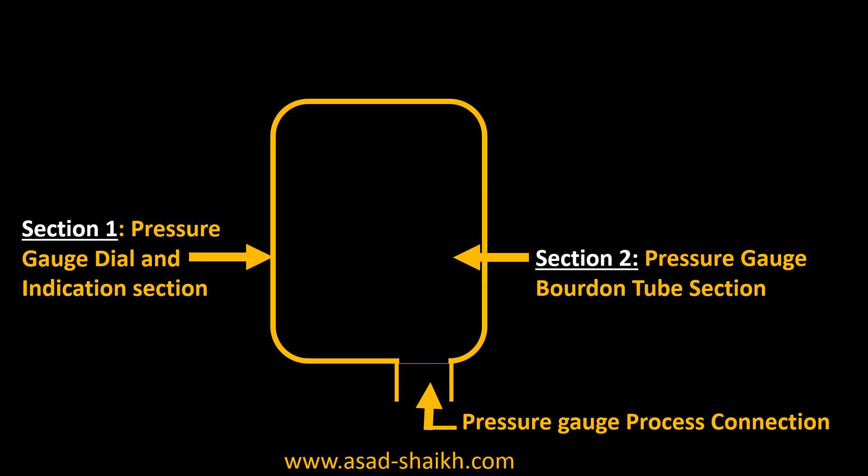Now the interesting question is: what if at high pressures the Bourdon tube ruptures and the process fluid comes out from the Bourdon tube? That fluid would eventually find its way out through the gauge dial, and this could injure the plant personnel who is in front of the pressure gauge. This would be a very hazardous scenario.